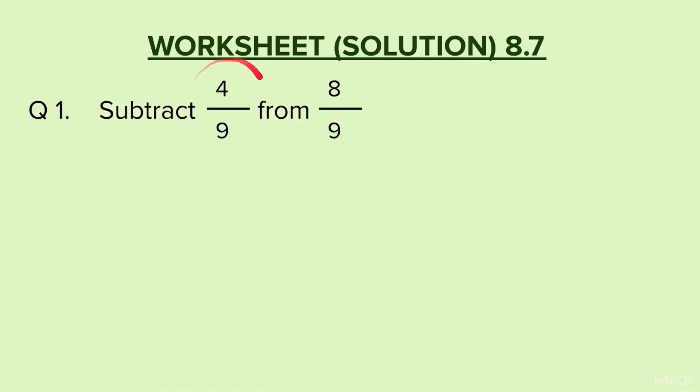Subtract 4 by 9 from 8 by 9. So, isko hum likhenge 8 by 9 minus 4 by 9. Humein jis fraction mein se minus karna hai, yani ki the bigger fraction usko hum pehle likhte hain. 8 by 9 pehle likha hai, baad mein 4 by 9 likha hai. Phir hum next step mein likhenge 8 minus 4, the whole upon 9, which is equal to 4 by 9. Ab dhyan dijiye, students, kisi mein bhi denominator ko humne change nahi kiya hai. To, yahi hamara answer ho gaya 4 by 9.